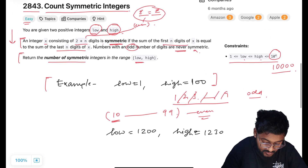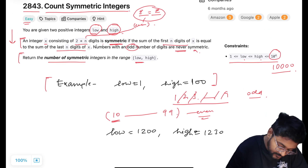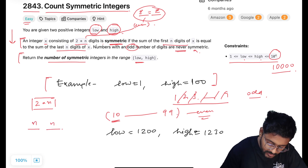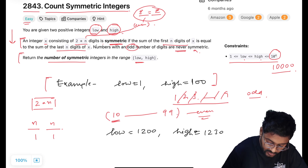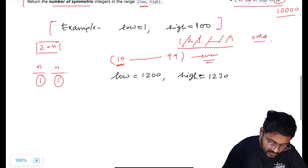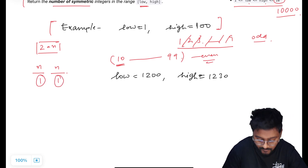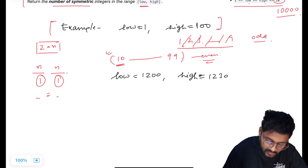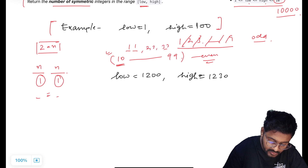The symmetric integer has 2*n digits — n digits in the first half, n digits in the second half. If the digit count is 2, then n=1, so 1 digit on the left half and 1 digit on the right half. Since there's only 1 digit on each side, for the sums to be equal both digits must be the same. So for a 2-digit number, only one possibility: the left digit and right digit are the same — like 11, 22, 33, through 99.